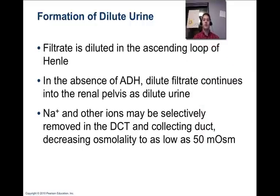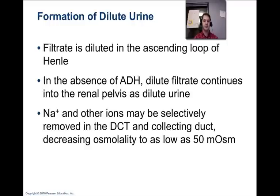To form dilute urine: as we go up the ascending loop of Henle, filtrate gets diluted as sodium is pumped out. In the absence of ADH, dilute filtrate flows out of the collecting duct and into the renal pelvis as dilute urine. Sodium and other ions may be selectively removed in the distal convoluted tubule and collecting duct, further diluting the urine.